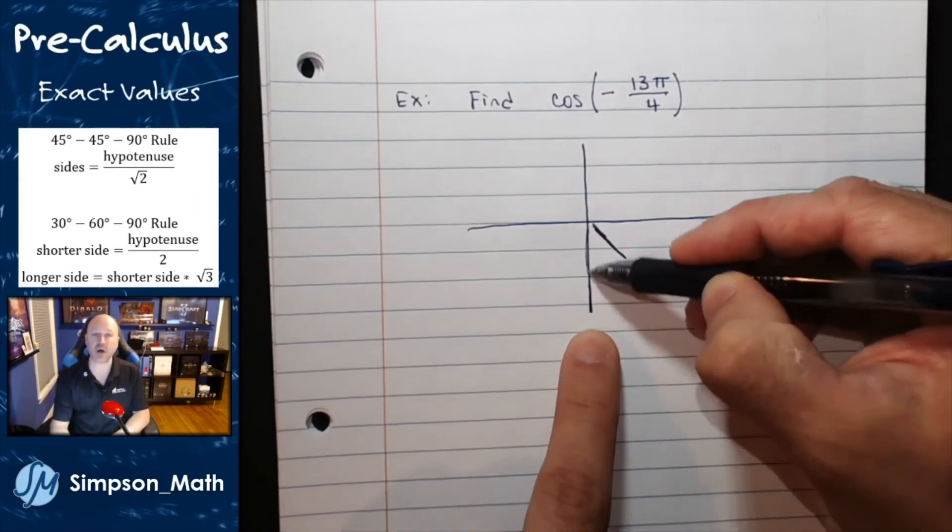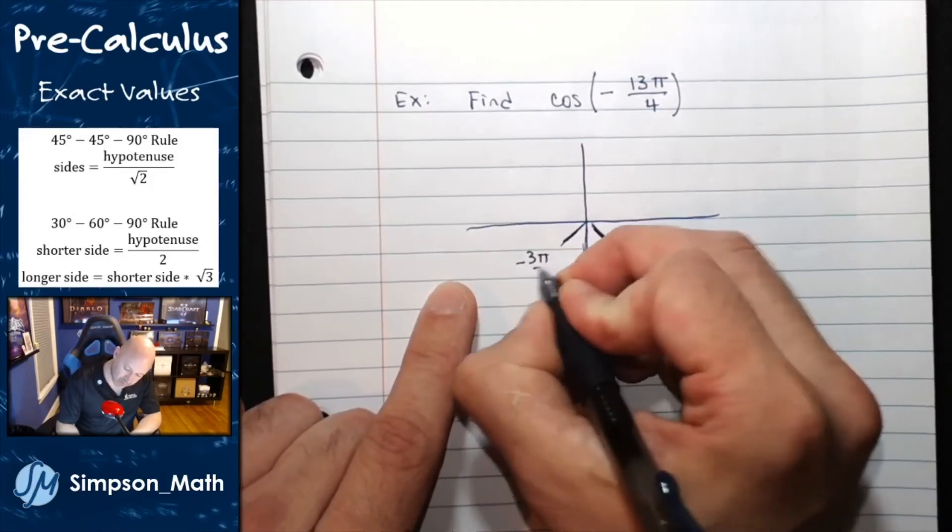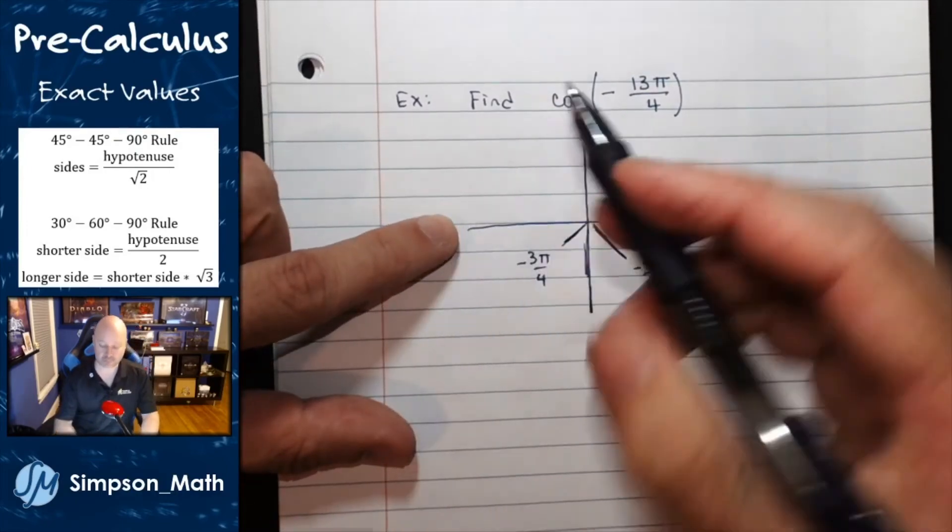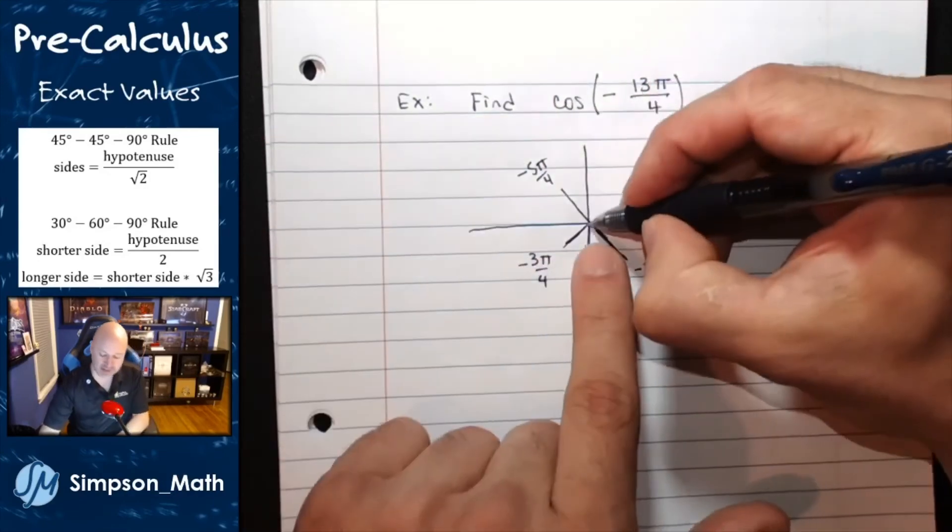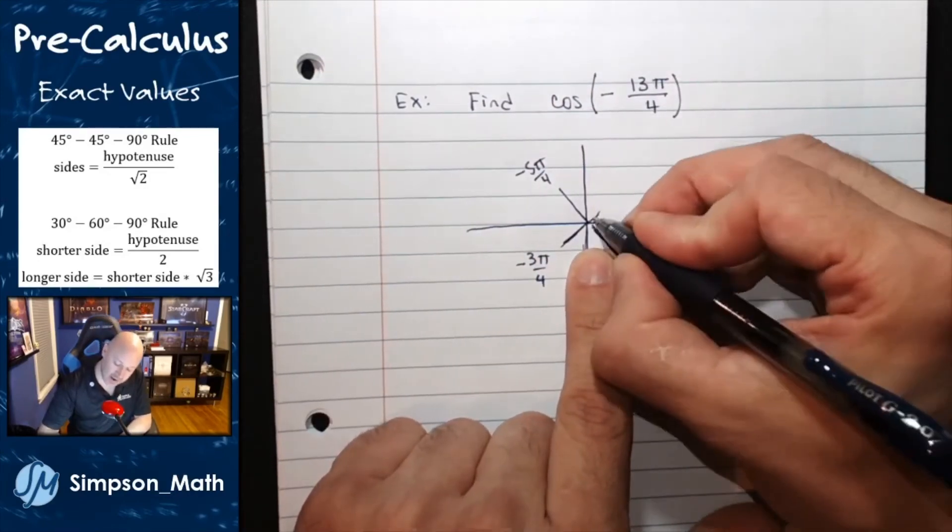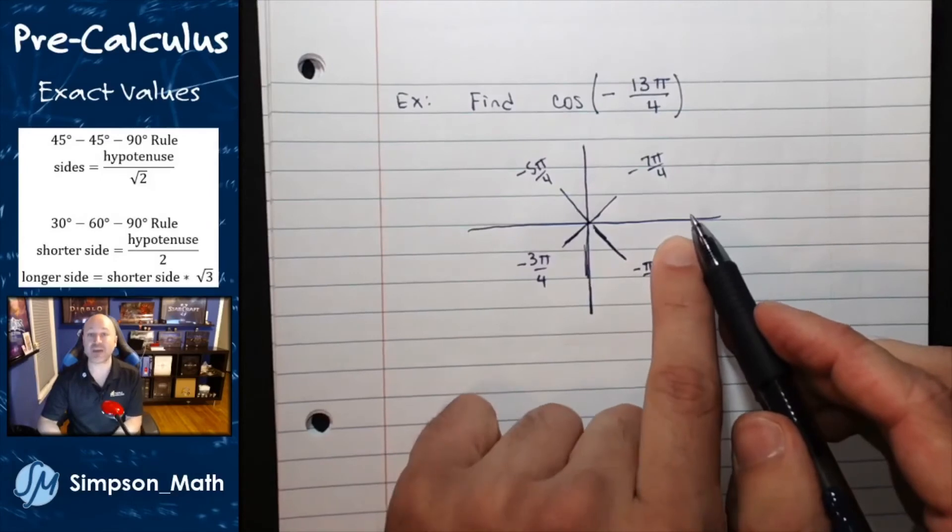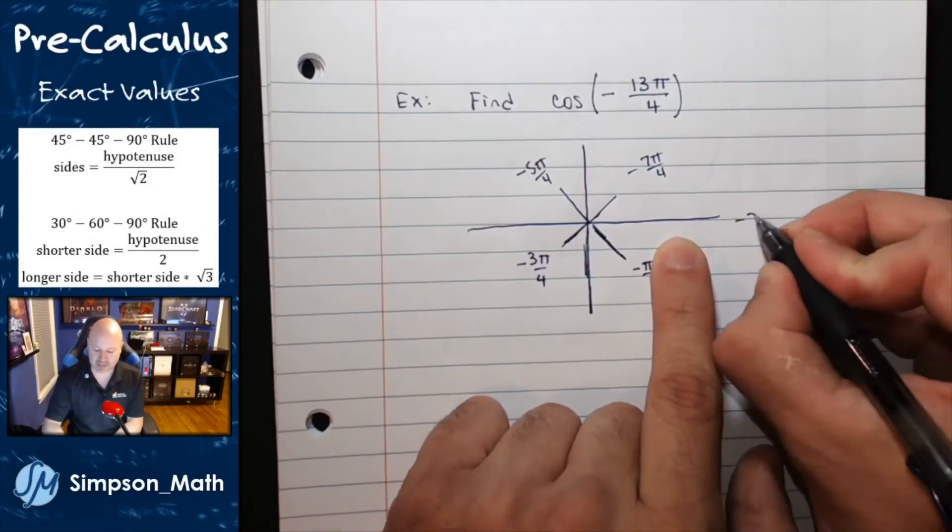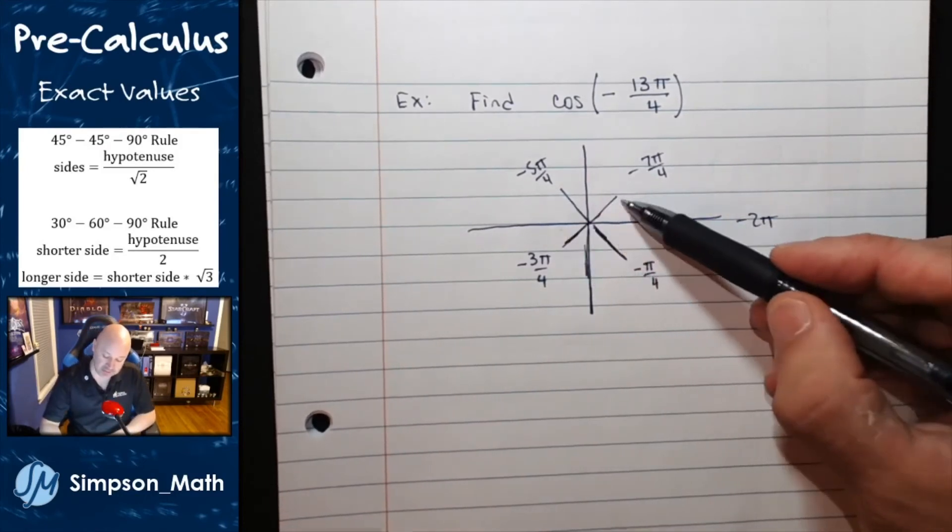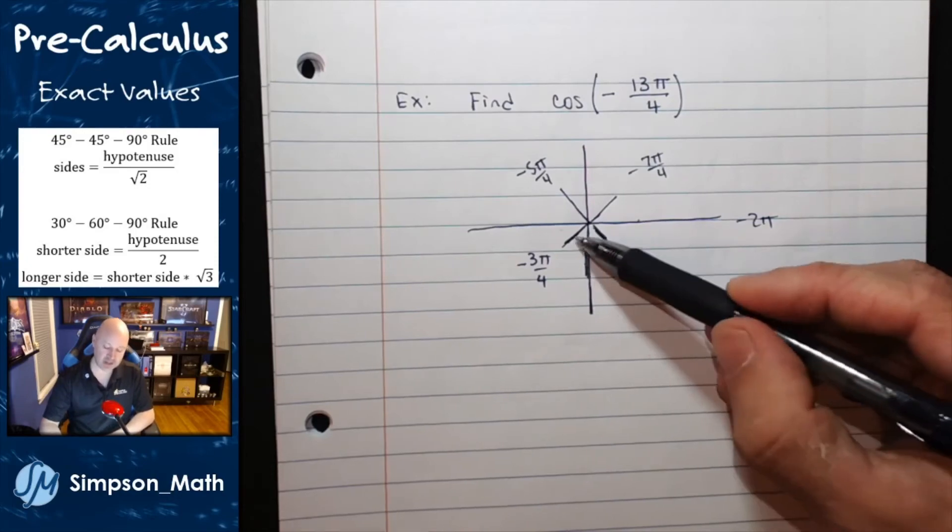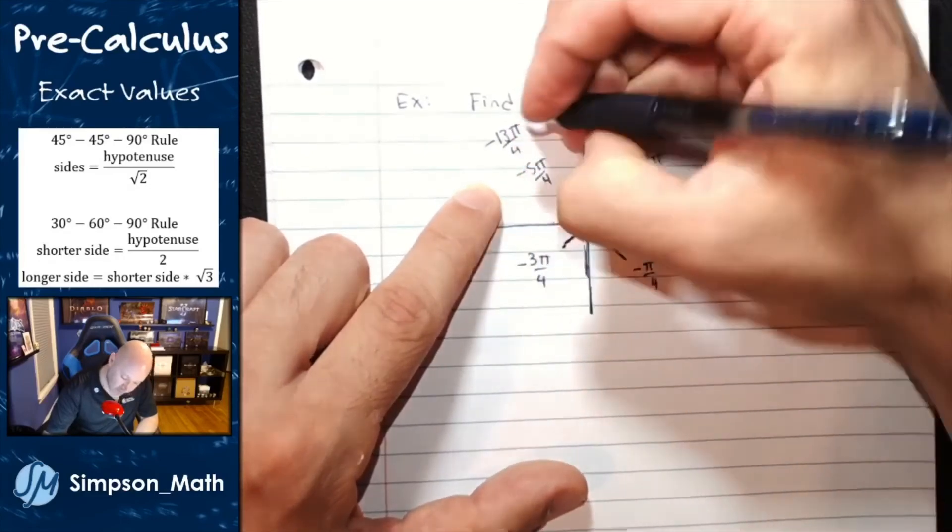So every 45 degrees or negative 45 degrees is a negative pi fourths. This is negative one pi fourths. This is negative two pi fourths. Here I have negative three pi fourths. Negative four. Negative five pi fourths. Negative six pi fourths. Negative seven pi fourths. A full revolution would get me to negative eight pi fourths, which reduces to negative two pi. Keep going. That was one, two, three, four, five, six, seven, eight. Negative nine. Negative ten. Negative eleven. Negative twelve. This is negative thirteen pi fourths.